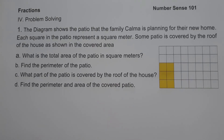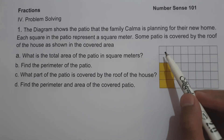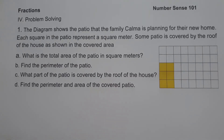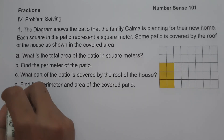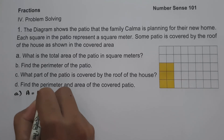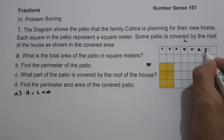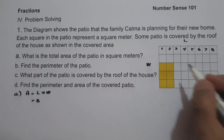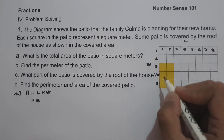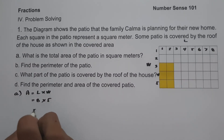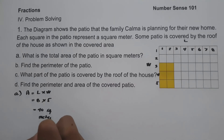On our last set of examples, we have problem solving. Number 1: the diagram shows a patio that the family Kalma is planning for their new home. Each square in the patio represents a square meter, and some patio is covered by the roof of the house. On letter A, what is the total area of the patio in square meters? Using the formula area equals length times width, counting gives us a length of 8 and a width of 5. So 8 multiplied by 5 is 40 square meters — this is our area.